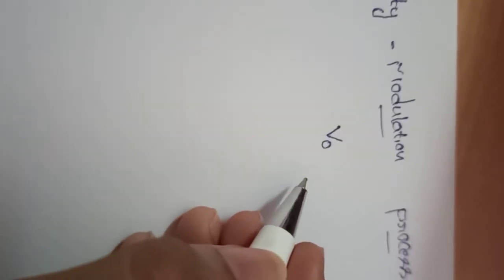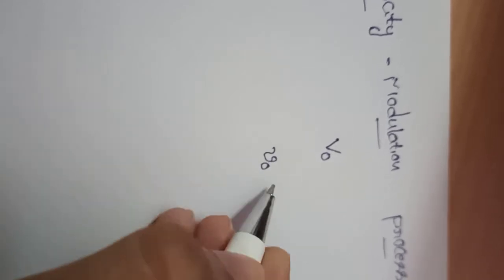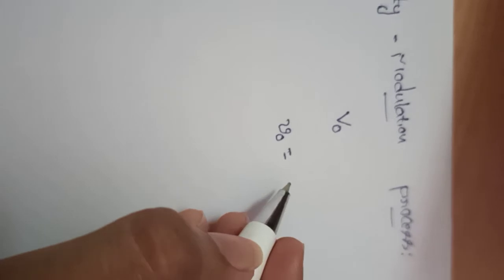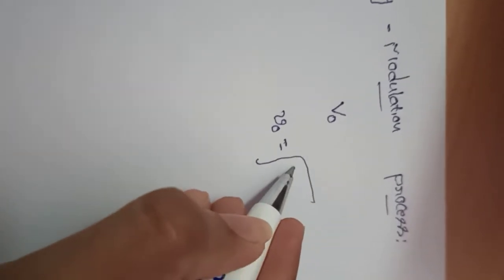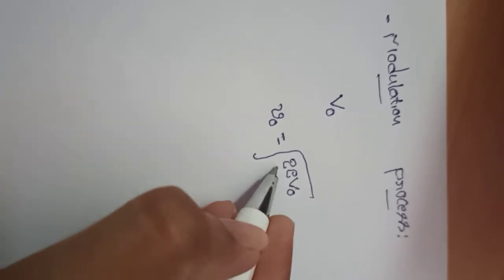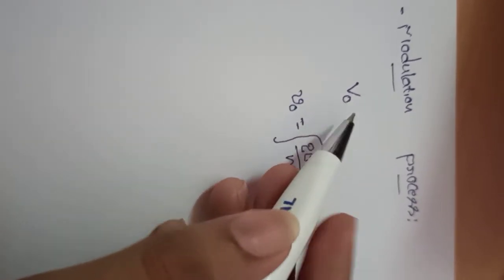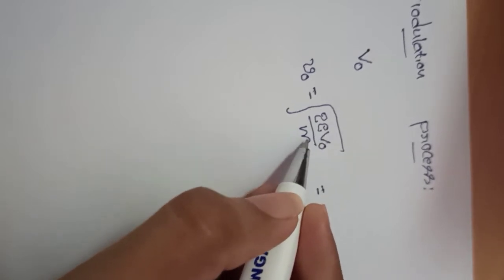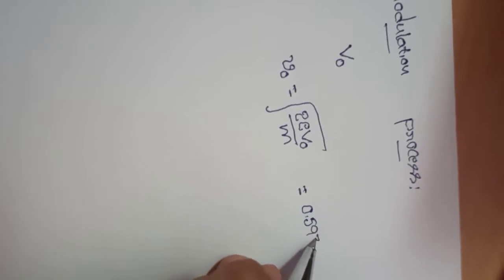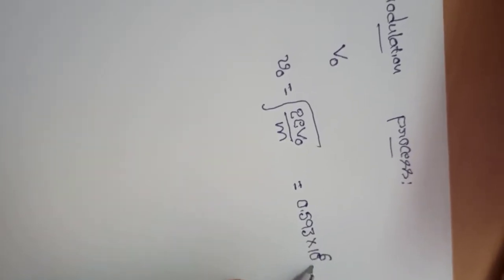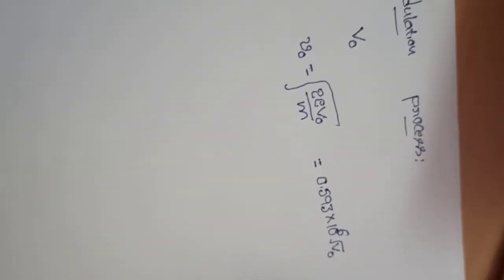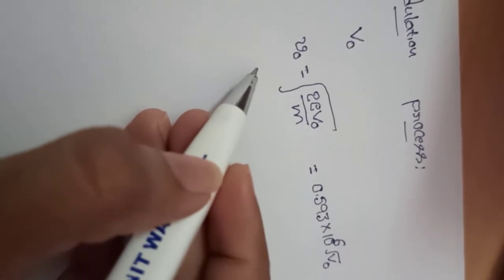We know electrons are accelerated by high DC voltage from the cathode terminal. That high DC voltage is considered as capital V0. The electrons are moving with a uniform velocity v0 before reaching the buncher cavity. The velocity of the electron v0 equals the square root of 2eV0 divided by m, where m is the mass of the electron, e is the charge of the electron, and capital V0 is the applied DC voltage. Substituting values, we get 0.593 × 10^6 × √V0 meters per second. This is the velocity of the electron before the buncher cavity.